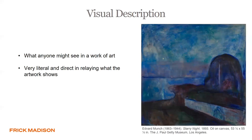Visual description, on the other hand, objectively relays what the viewer sees. It presents the reader with facts about the work but does not include the writer's personal thoughts or reflections. It's essentially what anyone might see in a work of art — no inferences are made, and no evaluation of the work is made. It's very literal and direct in relaying what the artwork shows. Ultimately, it mentions what the artwork is, as in the mention of the explicit meaning of the still life discussed at the start of this program.